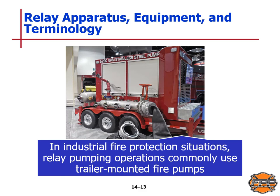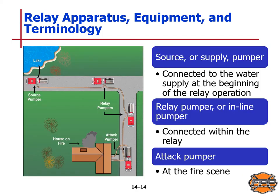In an industrial fire protection situation, relay pumping operations are commonly used with tractor-mounted fire pumps. In the relay, you have different pumpers. The first is your source or supply pumper, which is connected to the water supply at the beginning of the relay operation. The next vehicle or vehicles are the relay pumpers or inline pumpers — you may have one or more. These are connected within the relay between the attack pumper at the fire scene and the source pumper at the water supply. And then of course you have the attack pumper which is on scene itself, as illustrated in the diagram on this slide.